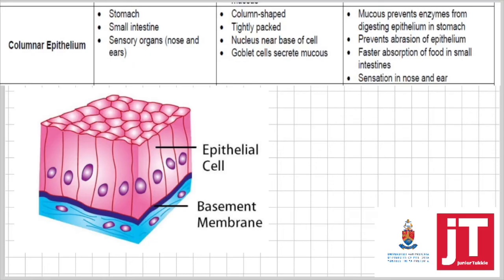Columnar epithelium — looking at the picture, you can see this tissue is made up of columns. It has a nucleus, is tightly packed, and there's your basement membrane. This tissue is found lining the stomach, the small intestine, and certain sense organs like your nose and ears. Lining the stomach, goblet cells secrete mucus that lines the stomach wall to prevent acid and enzymes from digesting the epithelial cells.